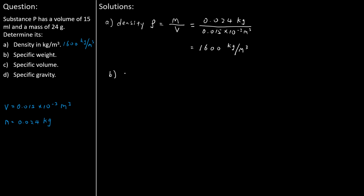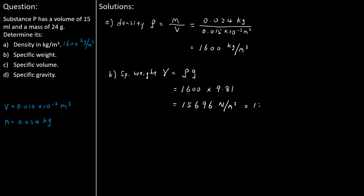For Part B, we know that specific weight gamma equals density rho times gravitational acceleration g, which is 1,600 times 9.81, and that gives us 15,696 newtons per cubic metre, or 15.696 kilonewtons per cubic metre.